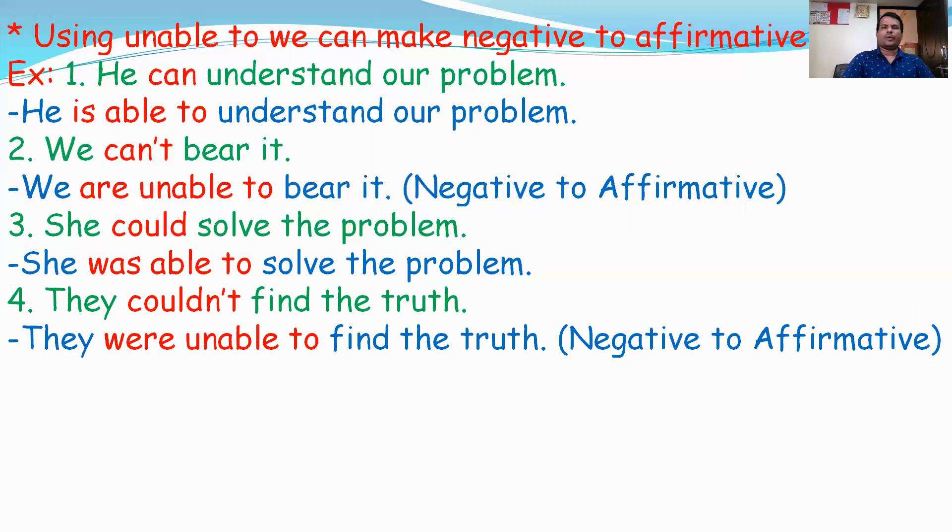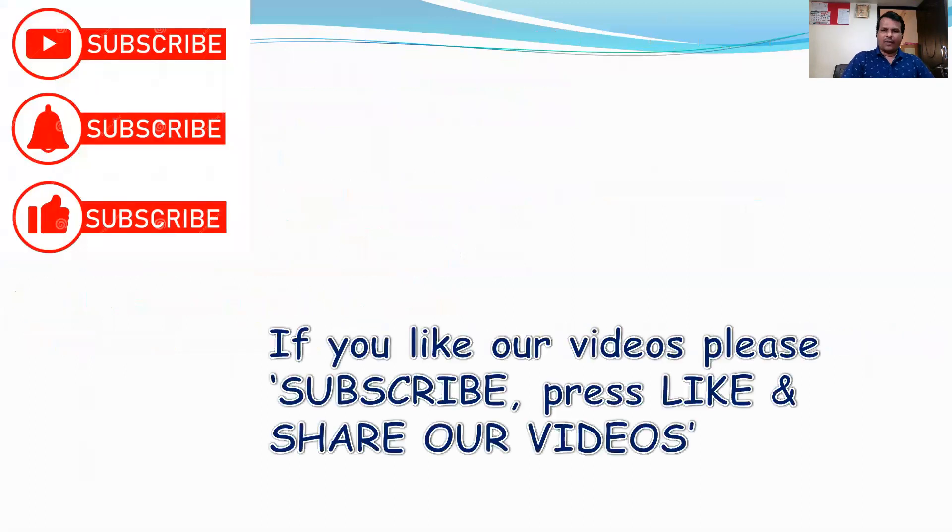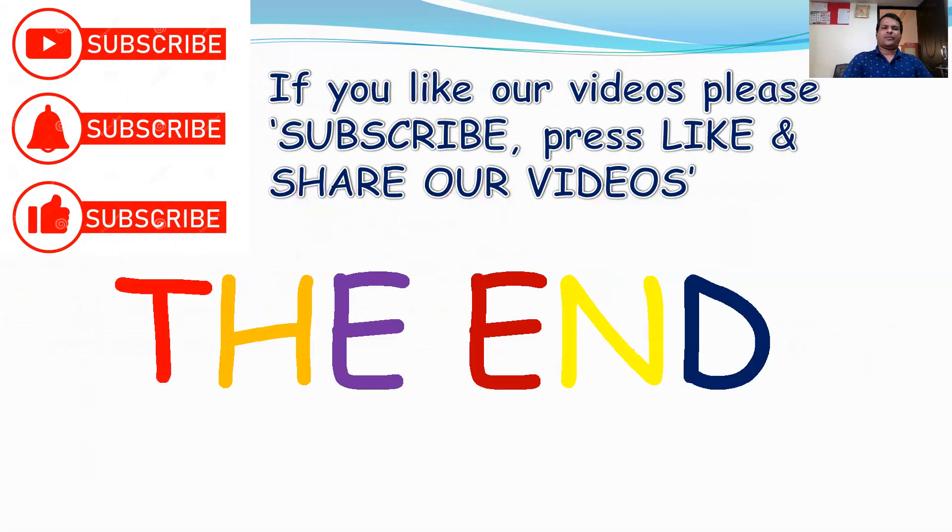Fourth sentence: They couldn't find the truth. 'Couldn't' is past tense and negative, so we use was/were and unable to. For 'they,' we use 'were.' Try to answer yourself. Subscribe to the channel for more videos. Thank you.